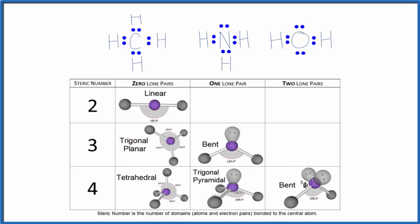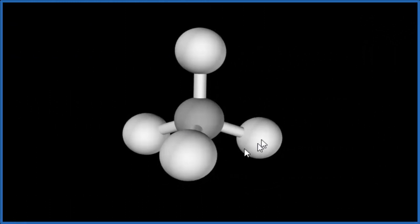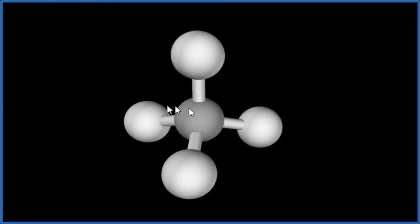Let's take a look at the bond angles and the effect of these lone pairs. Here we have methane, carbon in the center, four hydrogens. When we look at this, we see they're all spread out. It's a very symmetrical molecule.